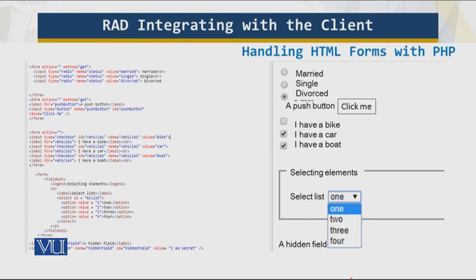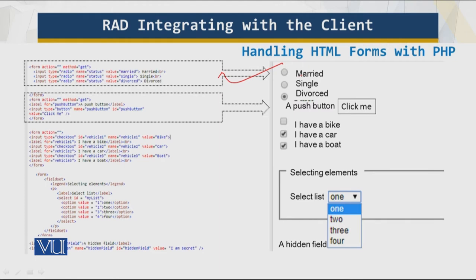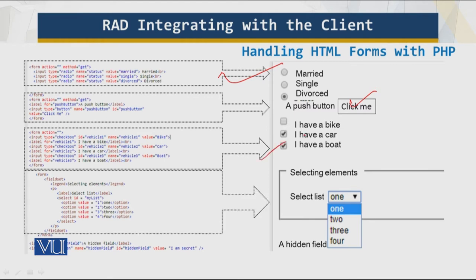This code here is for the radio button. Out of these three radio buttons, only one will be selected because a person can be of only one category. Then we have a push button which you can click. And of course we have checkboxes — a person can have a number of items selected in checkboxes. Then there is the dropdown list as well.